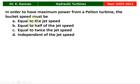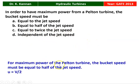The next question is from the 2013 question paper. In order to have maximum power from a Pelton turbine, the bucket speed must be: equal to the jet speed, half of the jet speed, twice the jet speed, or independent of the jet speed. For maximum power, the bucket speed should be half of the jet speed: U = V/2. So option B is the correct answer.